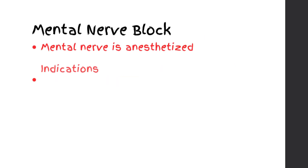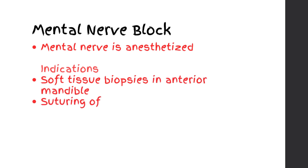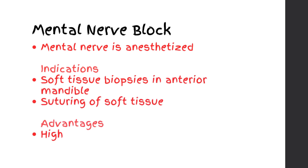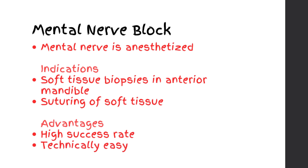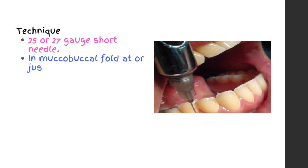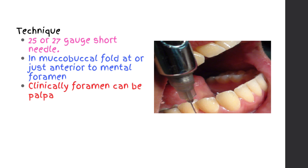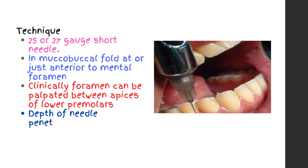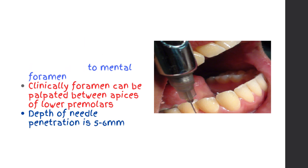Mental Nerve Block — the mental nerve is anesthetized. Indications: soft tissue biopsies in the anterior mandible; suturing of soft tissue. Advantages: high success rate, technically easy, usually atraumatic. Technique: 25 or 27 gauge short needle in the muco-buccal fold at or just anterior to the mental foramen. Clinically the foramen can be palpated between the apices of the lower premolars. Depth of needle penetration is 5 to 6 millimeters.